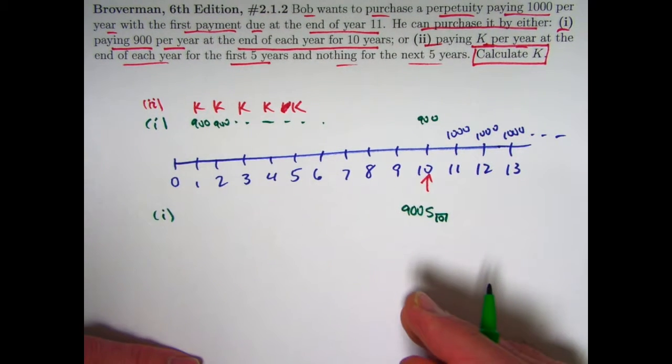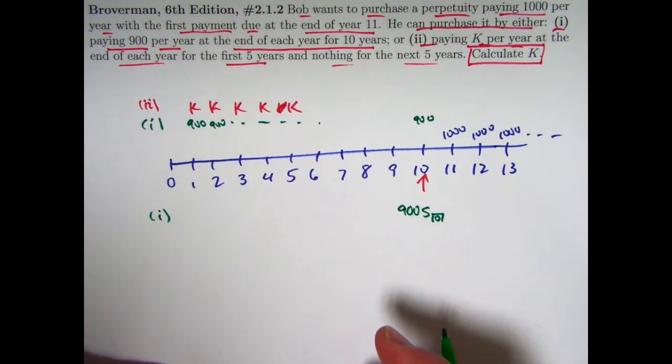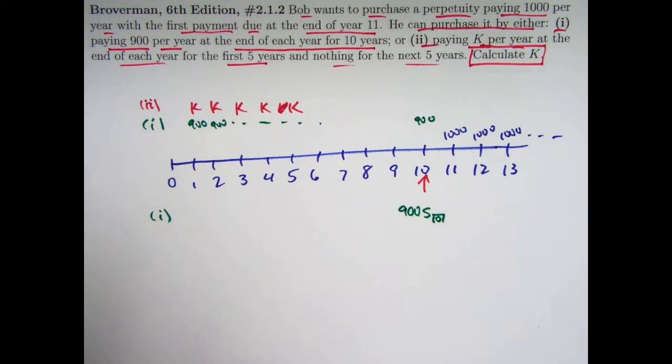We don't know the interest rate. Maybe, evidently, that's not going to be necessary to know. Or maybe we can solve for it. That's the value for option one at time 10.